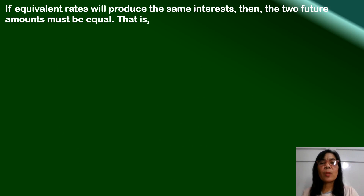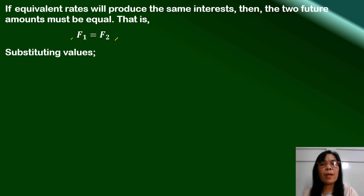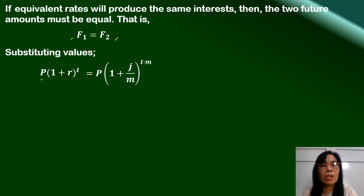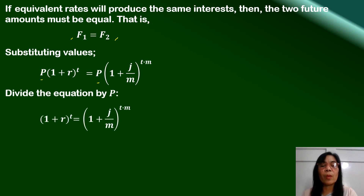If equivalent rates produce the same interest, then the two future amounts must be equal. The future amount invested at effective rate R equals the future amount invested at nominal rate J. Substituting, we have P times (1 plus R) raised to T equal to P times (1 plus J over M) raised to TM. Since both sides contain P, we divide each side by P, giving (1 plus R) raised to T equal to (1 plus J over M) raised to TM.